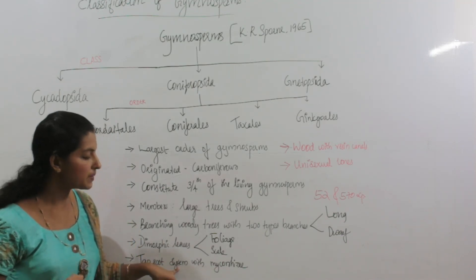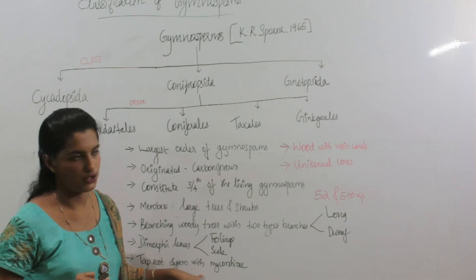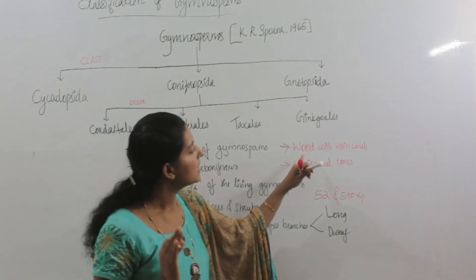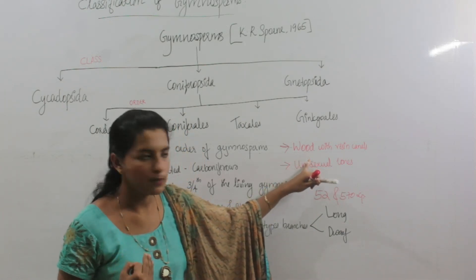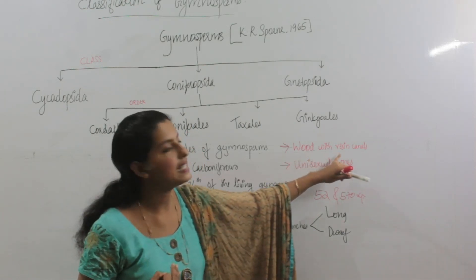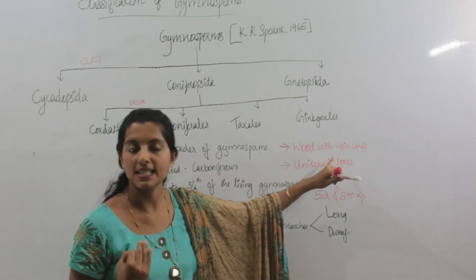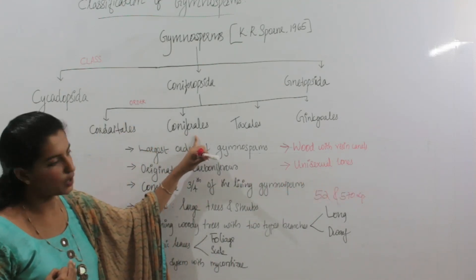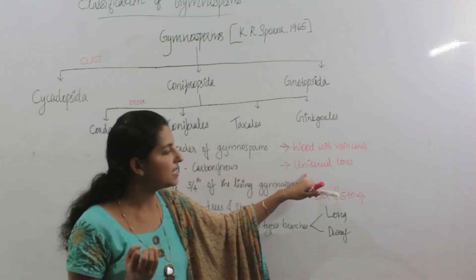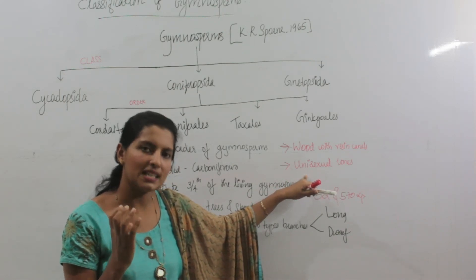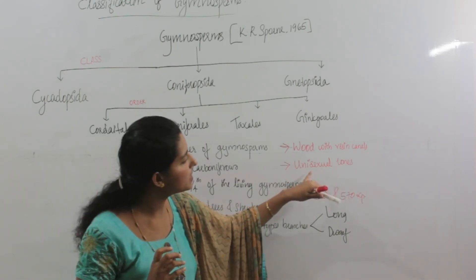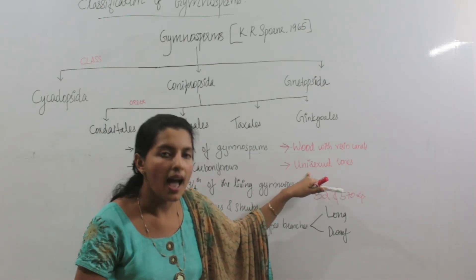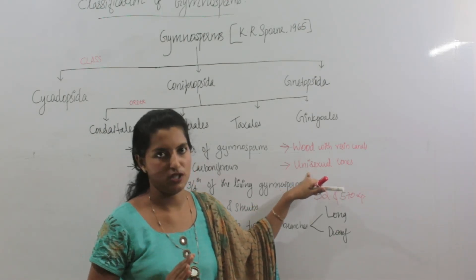They possess a tap root system with mycorrhizal association. Another very important point is that the wood of Coniferales possesses resin canals — a number of resin canals are present in the wood of Coniferales. They possess compact cones, and both male and female cones are present.